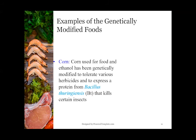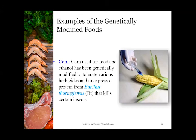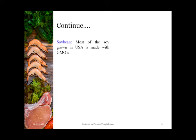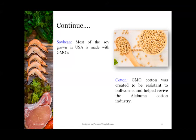Let's move forward and see what are the different examples of genetically modified foods. First: Corn. Corn used for food and ethanol has been genetically modified to tolerate various herbicides and to express a protein from Bacillus thuringiensis that kills certain insects. Second: Soybean. Most of the soya grown in the USA is made with genetically modified organisms.